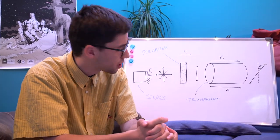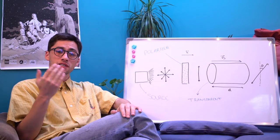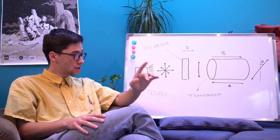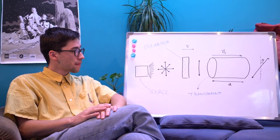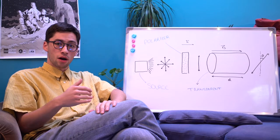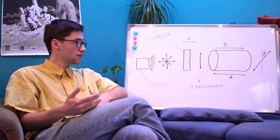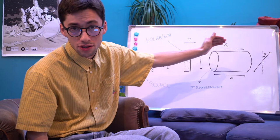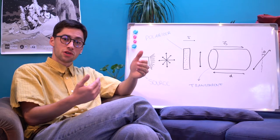Be careful because this rotation phenomenon is really similar to another one, which is optical activity. But it differs in an important way: the direction of the incoming light in the medium. In optical activity, the rotation will be the same whatever the direction of the incoming light, which is not the case with the Faraday effect. Because you need to have your magnetic field along the direction of propagation of the light. If the light propagates in the other direction, the rotation will reverse.